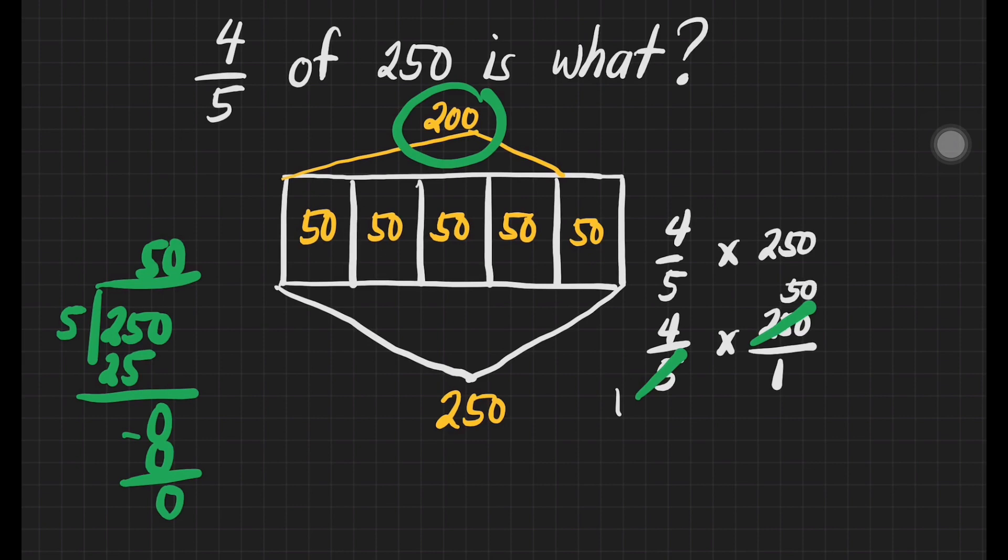Now, we can multiply. 4 times 50 is equal to 200. 1 times 1 is equal to 1. 200 divided by 1 is 200. Our final answer for this question is 200.